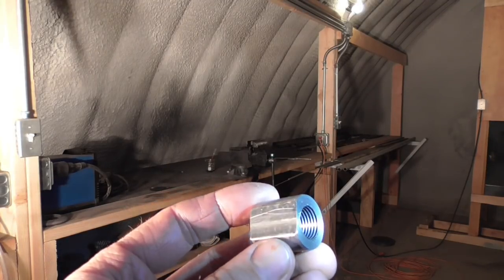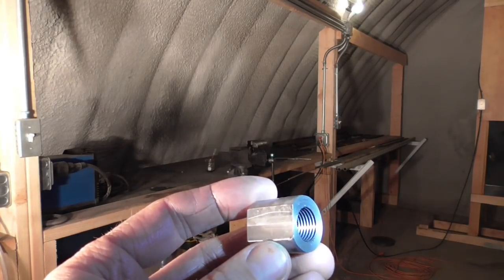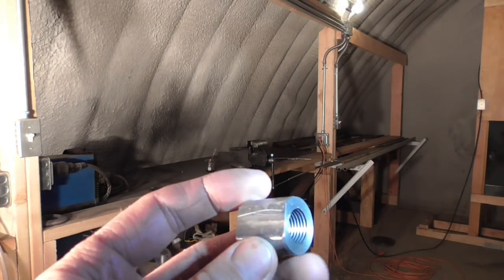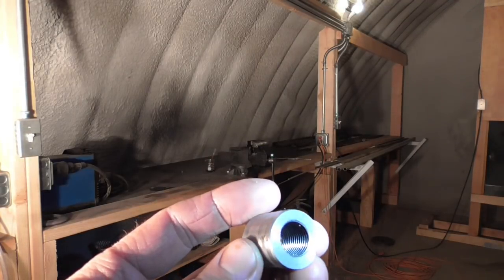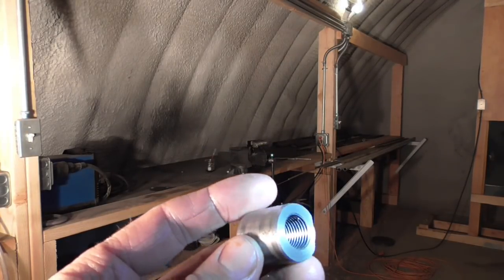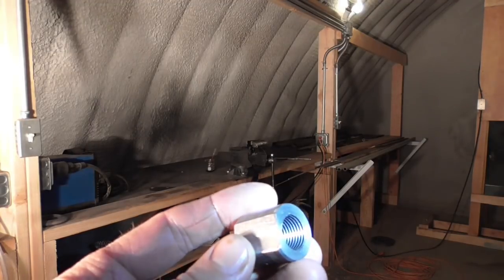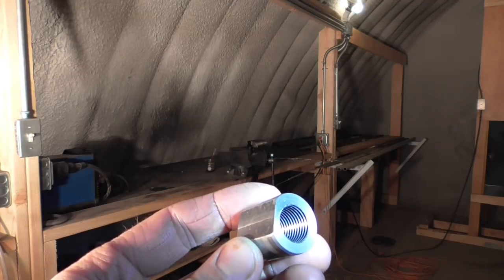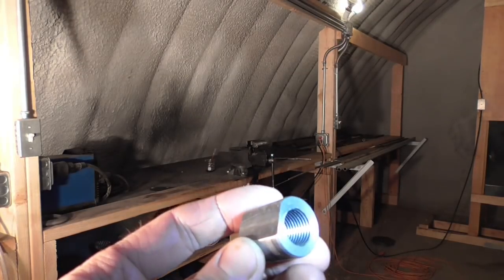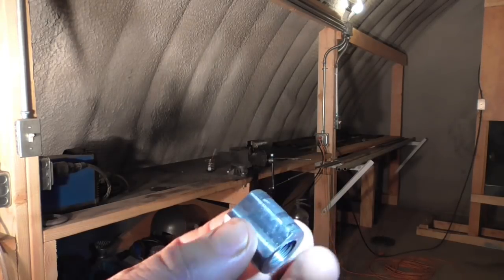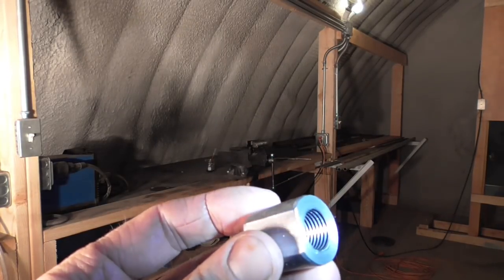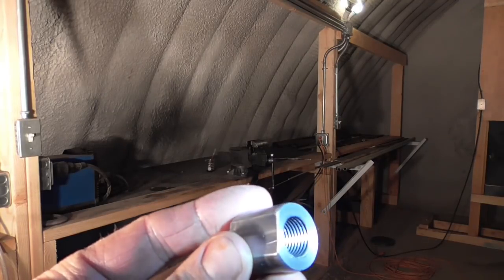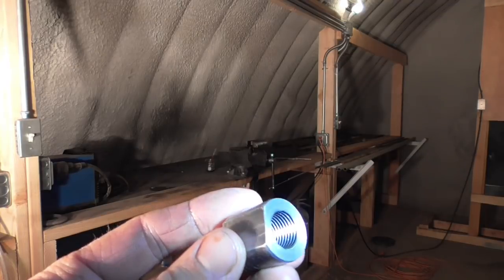Okay, so with the commercial cutting fluid, it seemed like at first it was slipperier than anything else I tried so far. The first two or three threads were definitely easier to cut, but then after that it got more difficult, more so I'd say than the sulfurized canola oil. And looking at the finished threads, they look pretty good but they do look a little bit rougher than what I was getting with the canola oil, whether sulfurized or not.